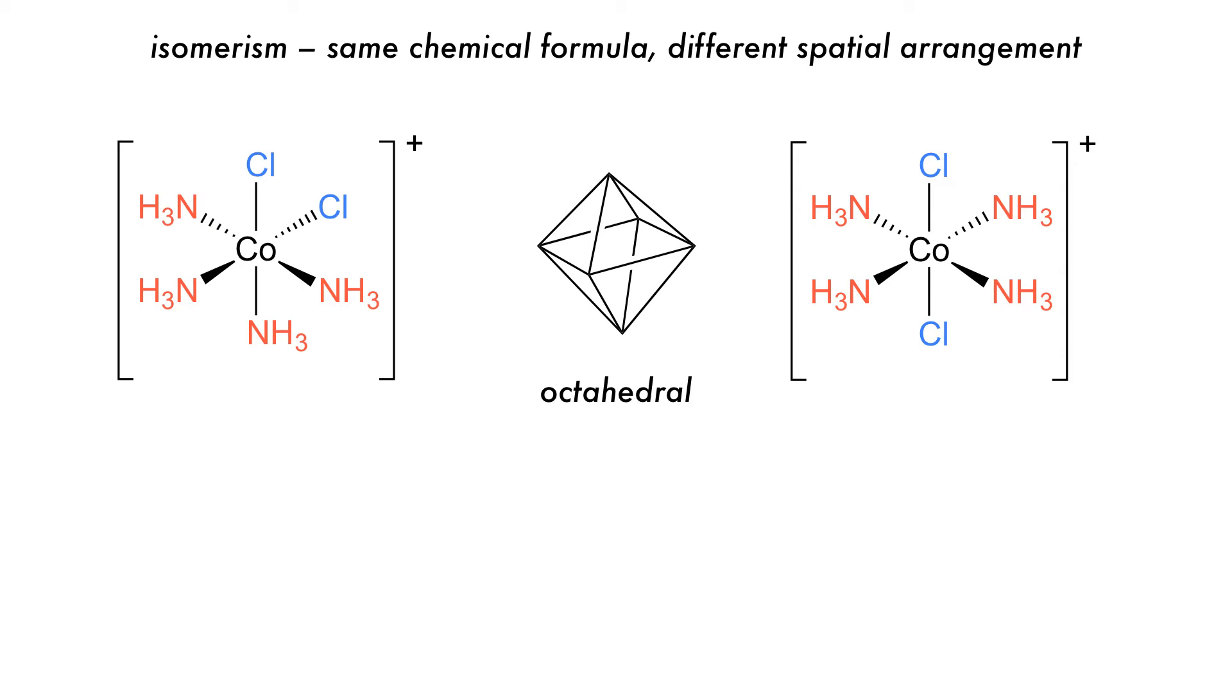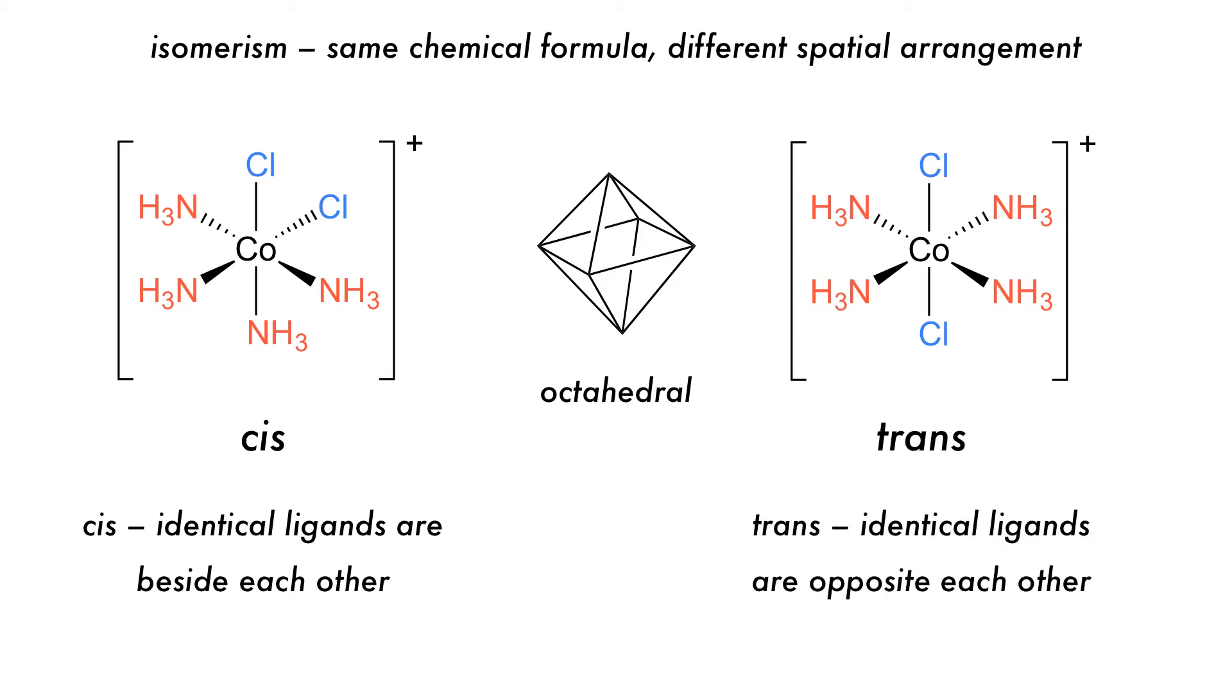Octahedral complexes can also have cis and trans isomerism, such as that shown here. The complex on the left has cis isomerism, with the identical ligands being beside each other, while the complex on the right has trans isomerism, and the chlorine ligands are opposite each other.